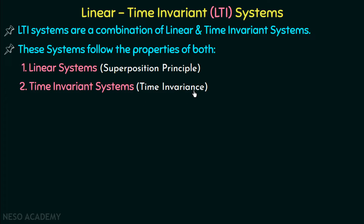The time-invariant systems follow the time-invariance property, which states that if you time-shift your input signal, your output would be exactly the same as if you time-shift the response to the original signal by the same amount. That is, any delay in input will result in the same delay in the output. The LTI system is a combination of these two systems.